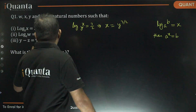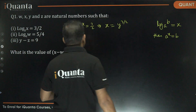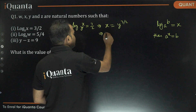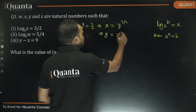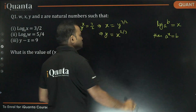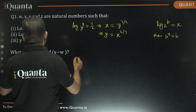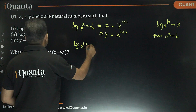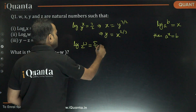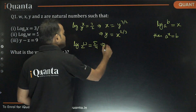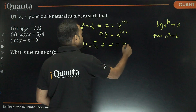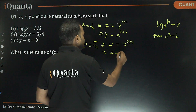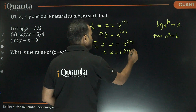In the third condition, Y minus Z is equal to 9. So let's find Y in terms of X: Y will be X to the power 2 by 3. Similarly, it's given that log W base Z is equal to 5 by 4, or W will be equal to Z to the power 5 by 4, or Z will be equal to W to the power 4 by 5.